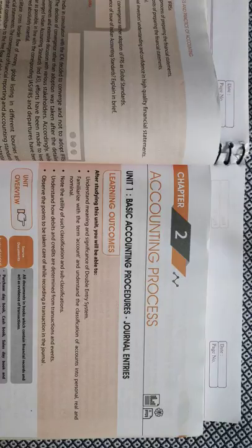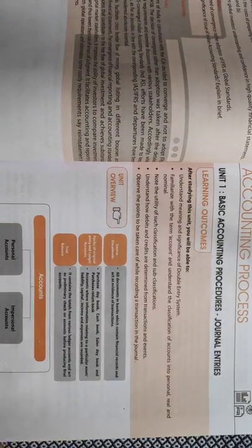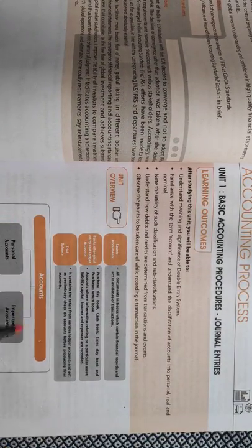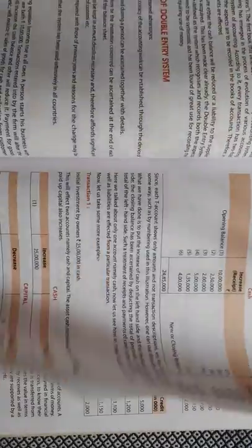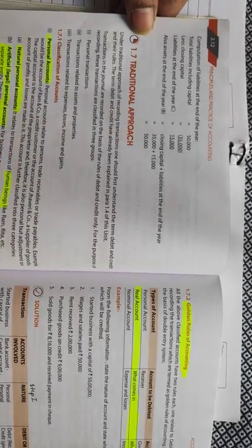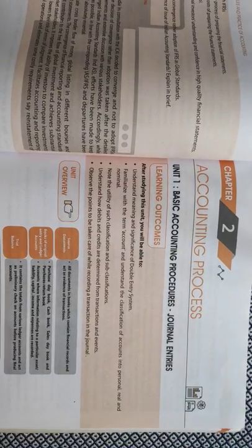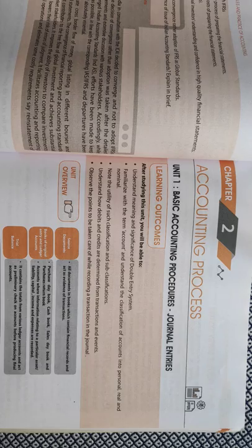To complete this chapter, every student must cover three topics. The first is the Accounting Equation Approach. The second is Rules of Debit and Credit. And the third is Types of Journal. These are the three topics which everyone should know to complete this chapter.